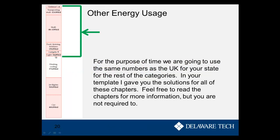There are other energy use categories at the top of the bar graph — lights, gadgets, food, farming, fertilizer, stuff, transporting stuff, and defense. Since this course focuses more on sustainable energy production technologies, for the purpose of time we'll assume that all of these categories for your state are the same as for the United Kingdom. Solutions are provided in the project template. If you want more information about these categories, feel free to read the textbook, but it's not required.